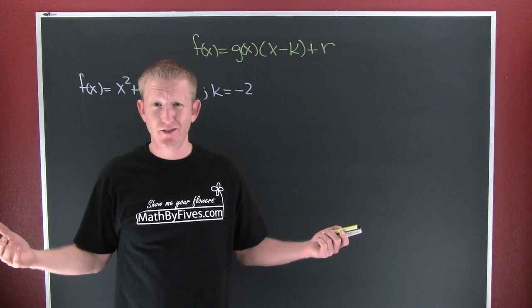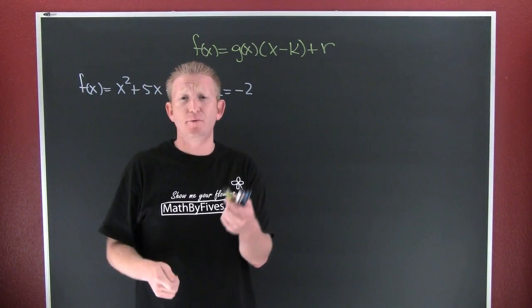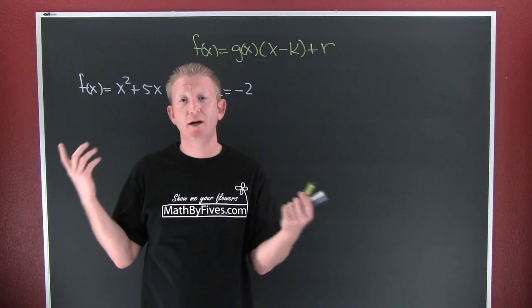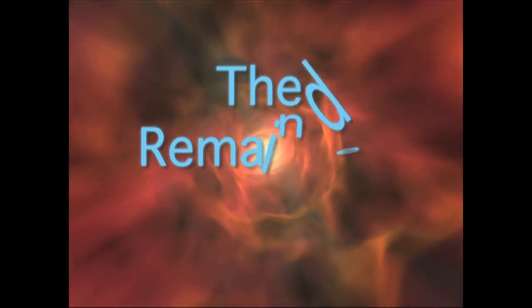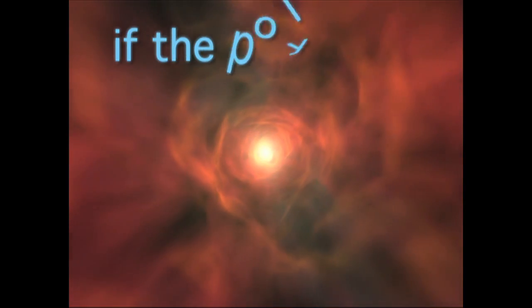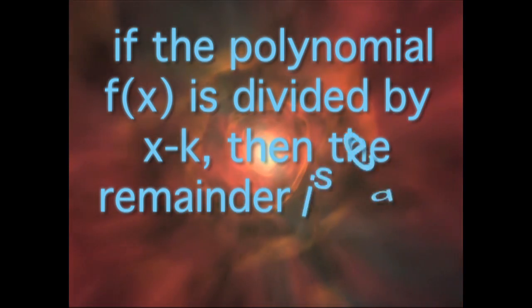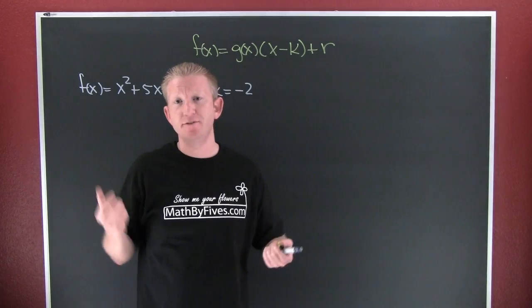Now we have a special case of the division algorithm called the remainder theorem. But before we can get into an example, we first need a definition. The remainder theorem: if a polynomial f(x) is divided by x minus k, then the remainder is equal to the function evaluated at k.